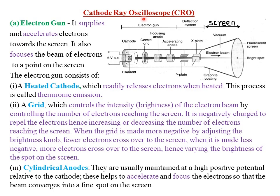Today I'm looking at the cathode ray oscilloscope, which is abbreviated as CRO. The main function of a cathode ray oscilloscope is to display the waveforms that are produced when the bright spot is either deflected using the y-plate or the x-plate. The deflection of this particular electron beam can produce a spot which is either vertical, horizontal, or even a sine wave.